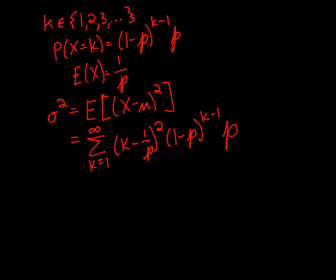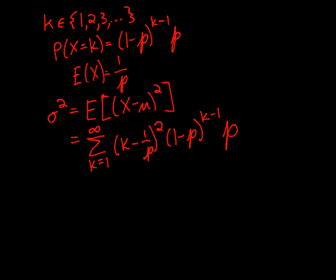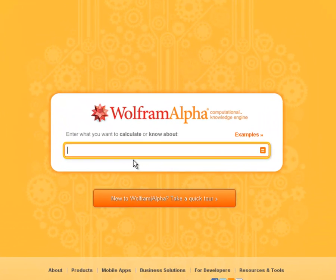So let me pull up Wolfram Alpha here. And we're going to sum a value k minus the expectation of a geometric random variable squared, because we're doing the standard deviation, or excuse me, the variance.